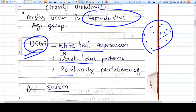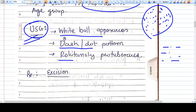On ultrasound you will find a white ball-like appearance. You'll also find dash and dot pattern due to skin and hair. Rokitansky protuberance we've already discussed. Treatment is excision.